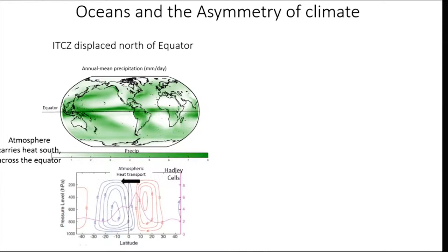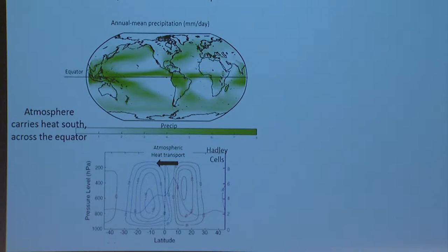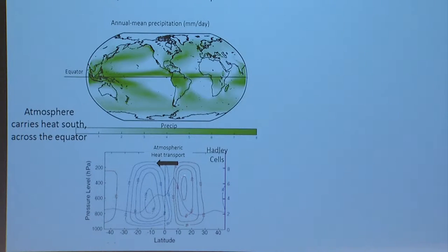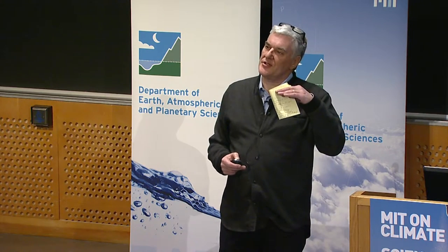The third aspect is the intertropical convergence zone — this band of precipitation is slightly north of the equator. This horizontal line is the equator, and this is the annual mean precipitation in millimeters per day. The axis of symmetry of climate is not at the equator — it's slightly north. In the atmosphere, these are the Hadley cells, with rising air in the convergence zone leading to precipitation. The rising branch is north of the equator, and this cell actually carries energy from the northern hemisphere into the southern hemisphere, shifting the axis north.